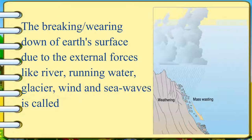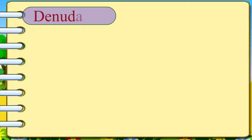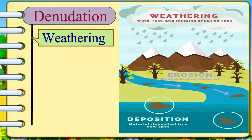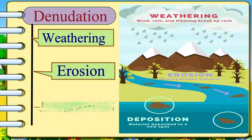wind and sea waves is called denudation. Denudation involves three major processes: weathering, erosion, and deposition.